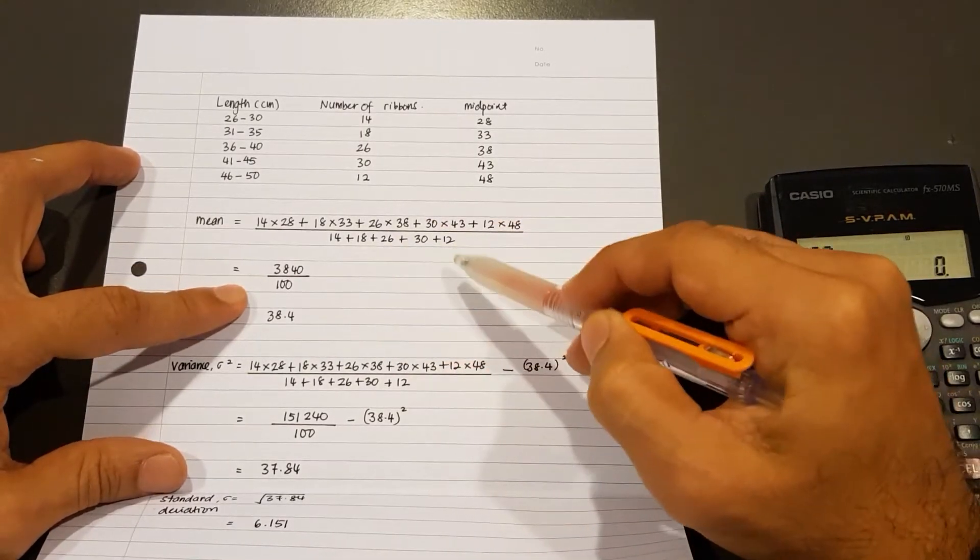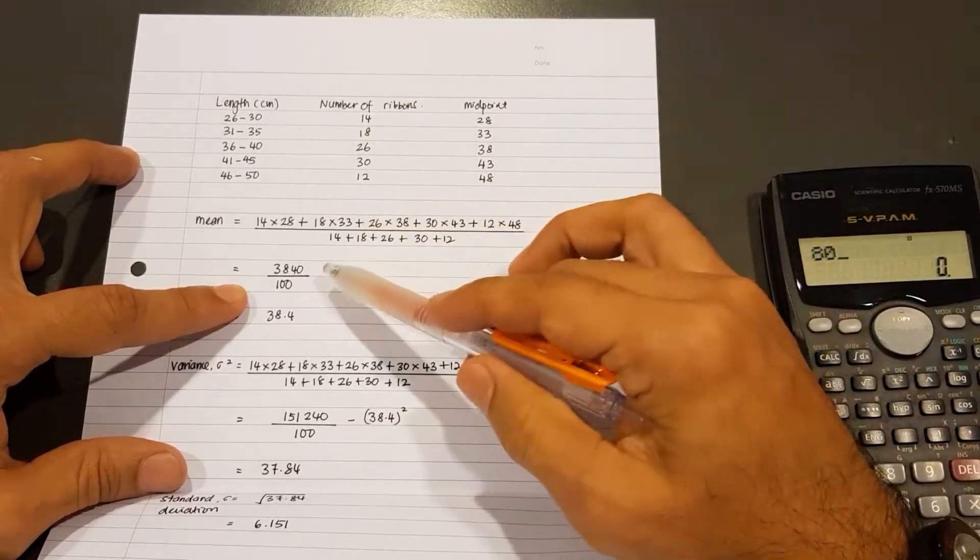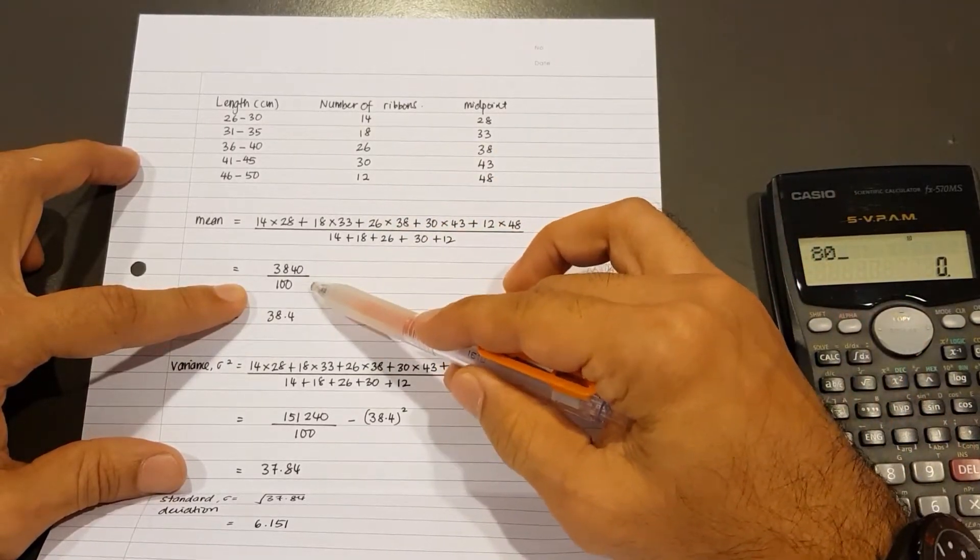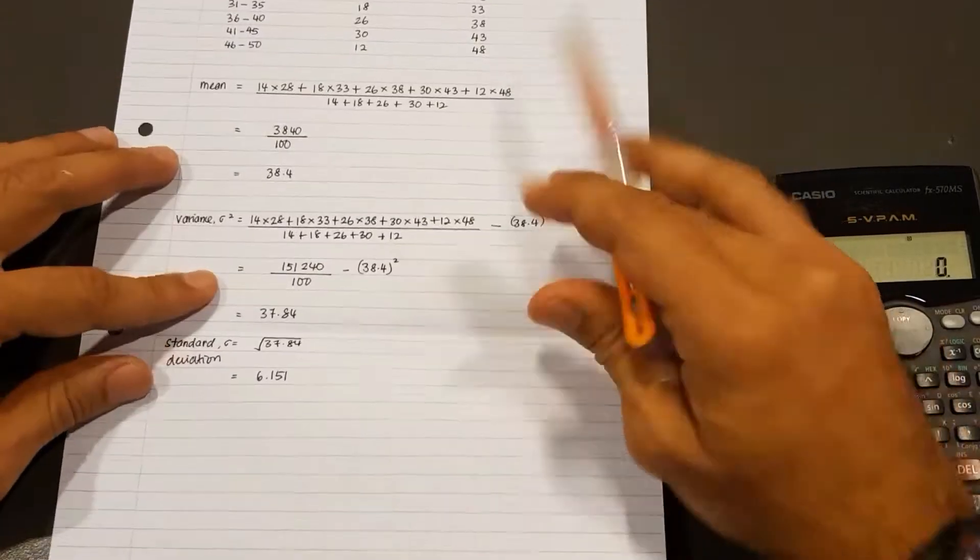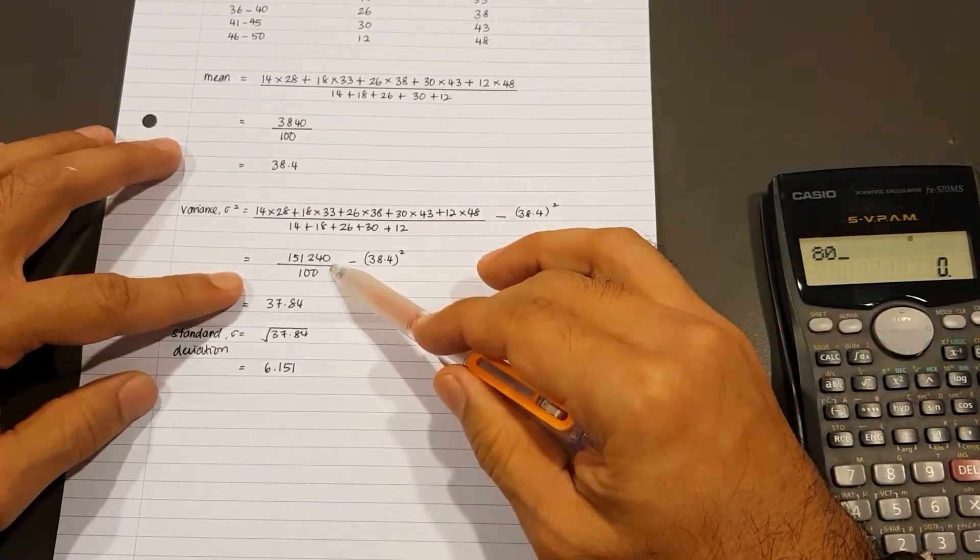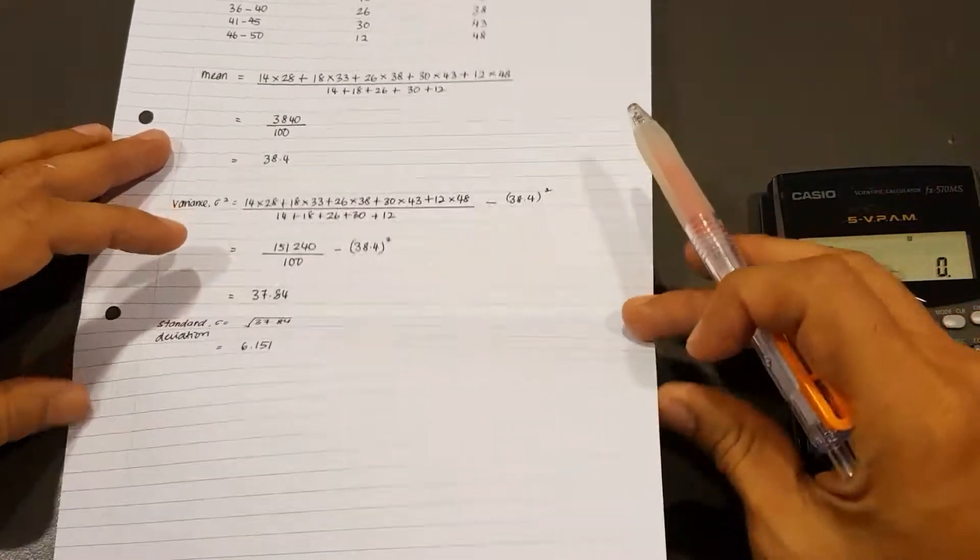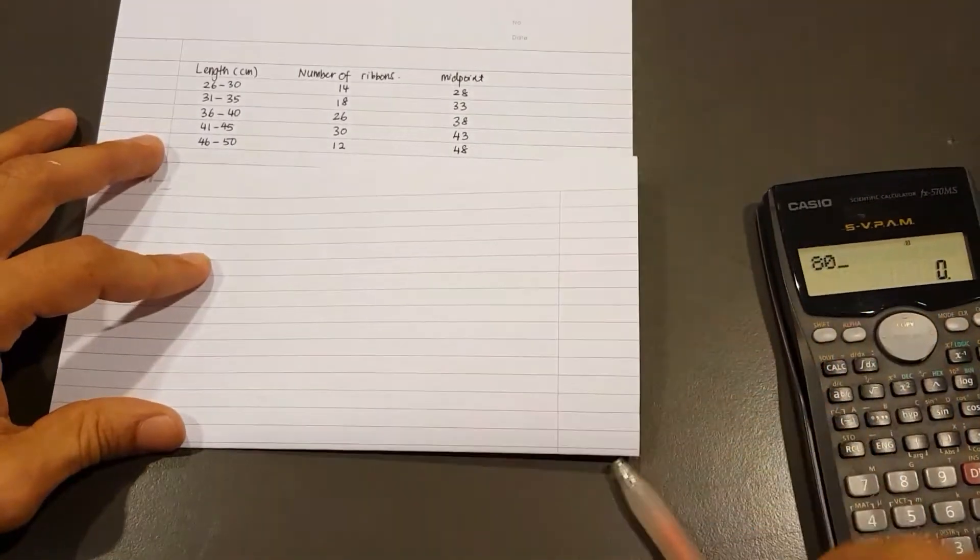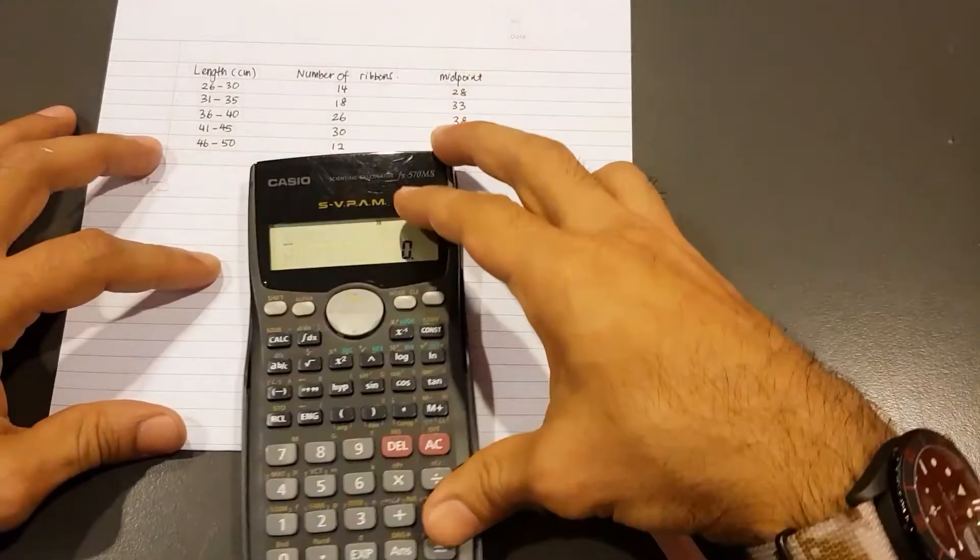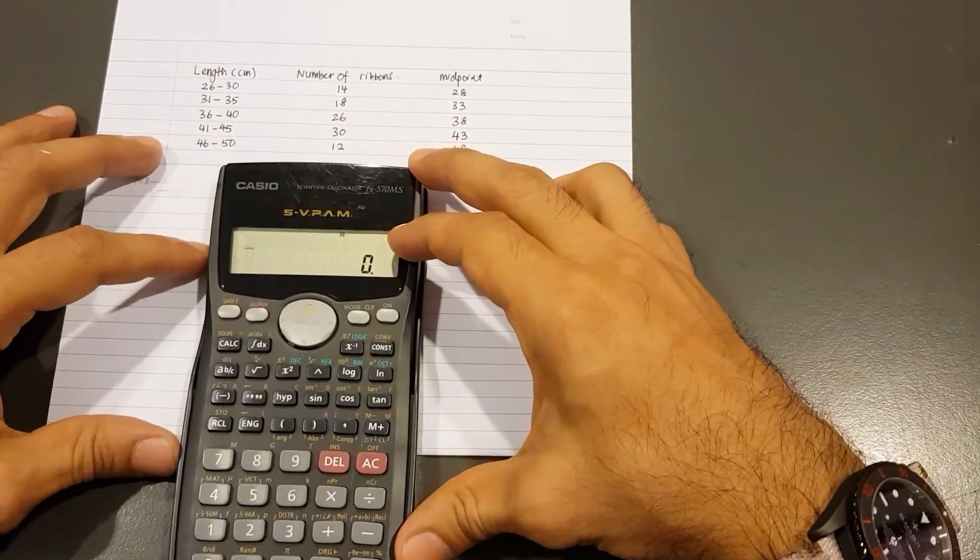Now the purpose of this video is to show you guys how we can verify or obtain these values here for the mean and these values here for the variance or to also find the standard deviation. So first I'll begin with this calculator. This is the 570MS.